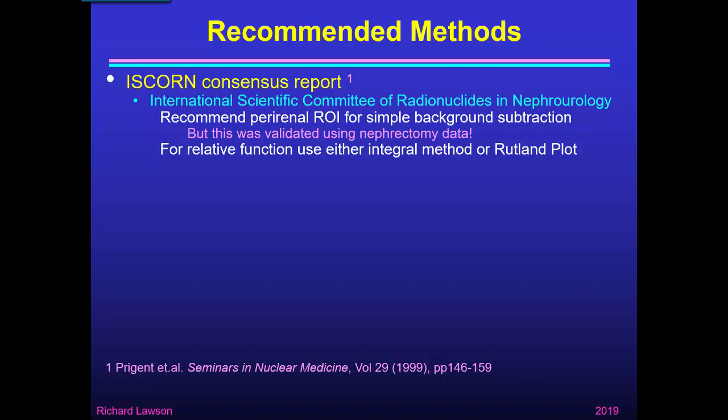They recommend starting with background subtraction using a perirenal region of interest, and then either using the integral method to calculate relative function from that curve, or, if you want to additionally subtract the blood background, going on to produce the Rutland plot — but after you've done the perirenal background subtraction.